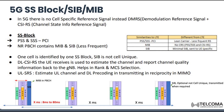Let's start with the 5G SS block, SIB, and MIB — how they are mapped and what they contain. In 5G there is no cell-specific reference signal. Instead we have a demodulation reference signal, plus CSI-RS and this SSB block.